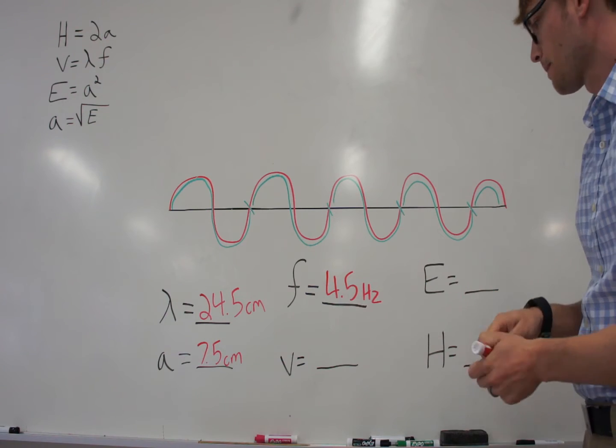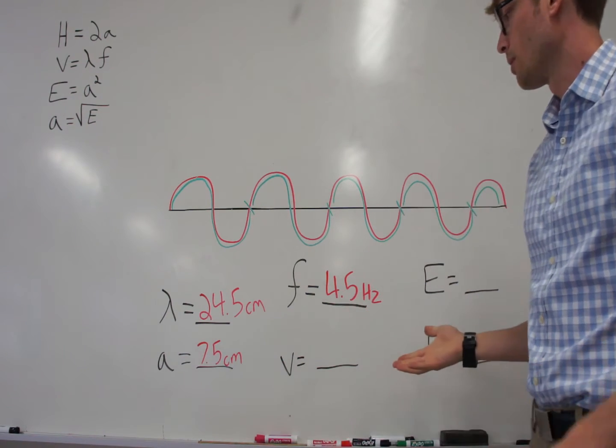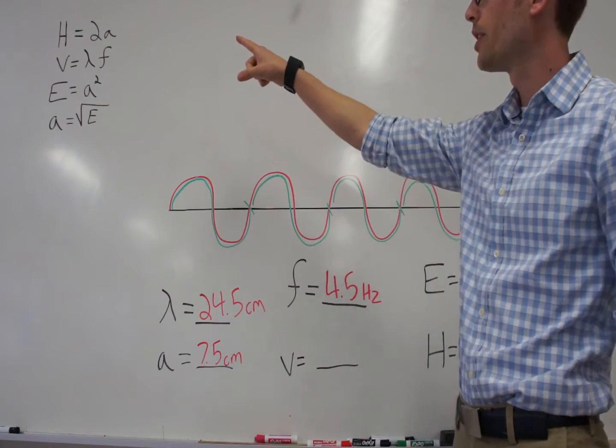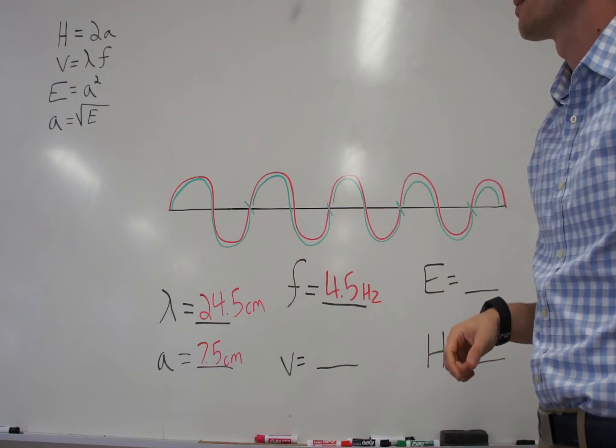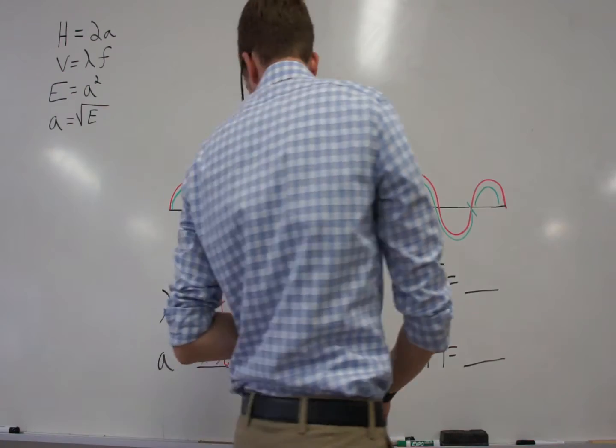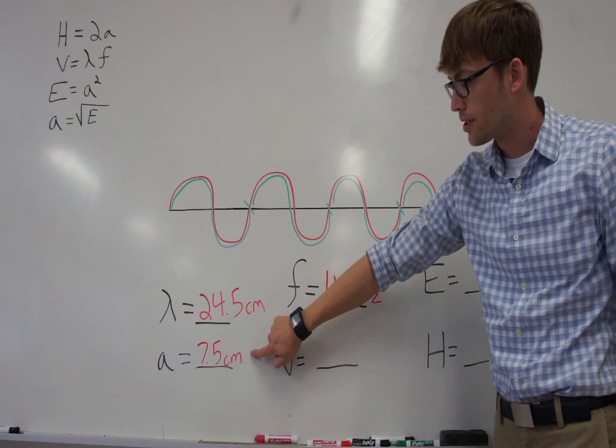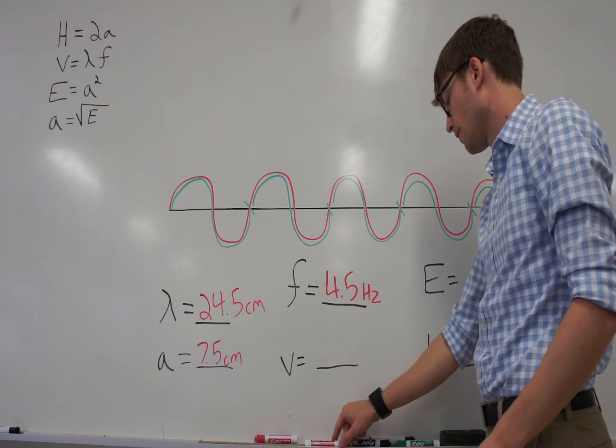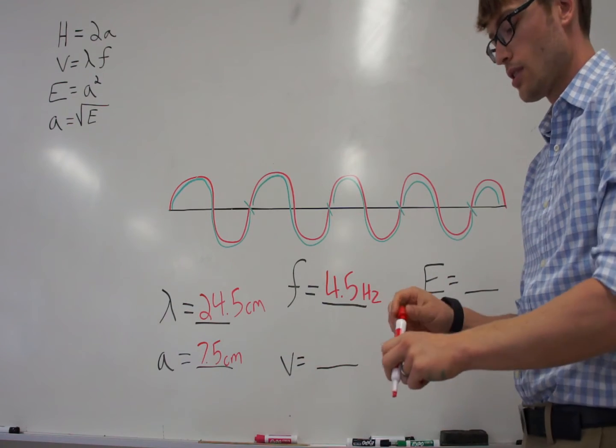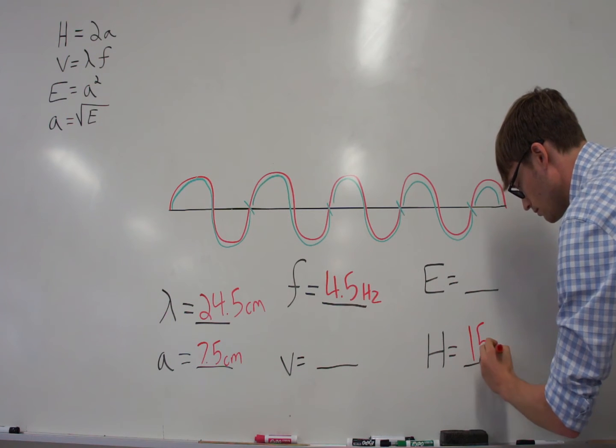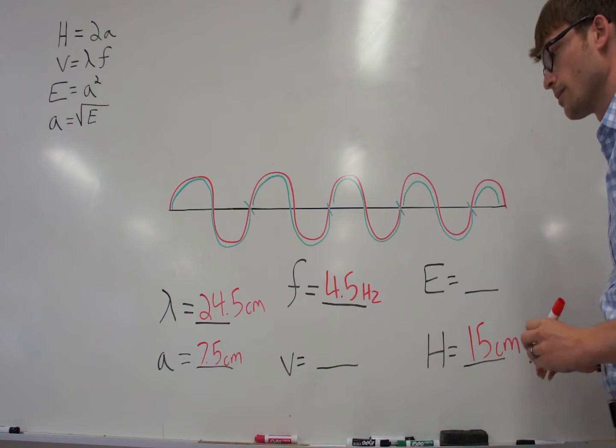Alright, now that we have measured everything that we can measure, we're going to have to start using our equations. The first one that we'll look at is height, and height is equal to 2 times the amplitude. We know that our amplitude is 7.5. So, if you simply do 7.5 times 2, that gives you 15. Of course, that's in centimeters.